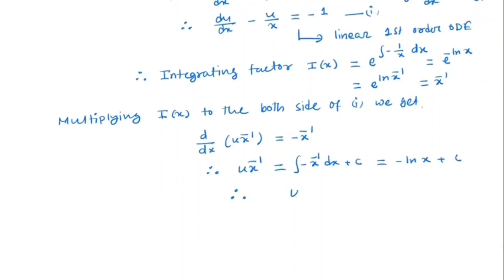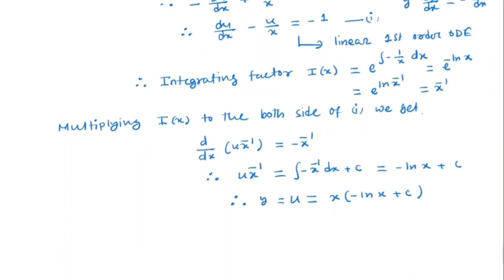So, we get u is equal to x times minus ln x plus c and u is nothing but y inverse. So, this is the general solution of the following Bernoulli's equation.